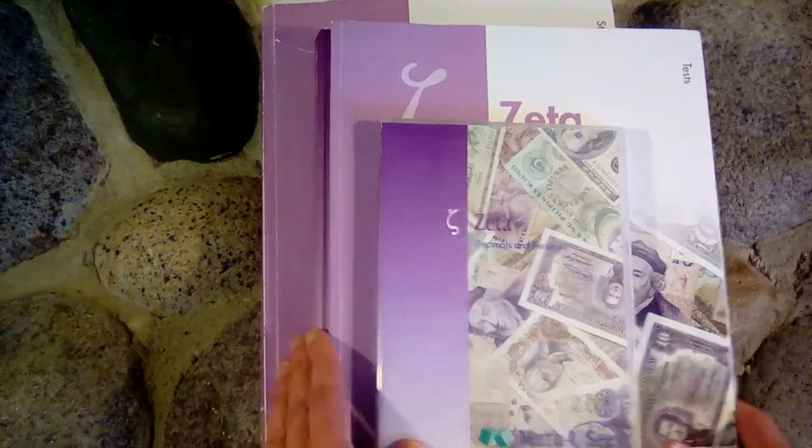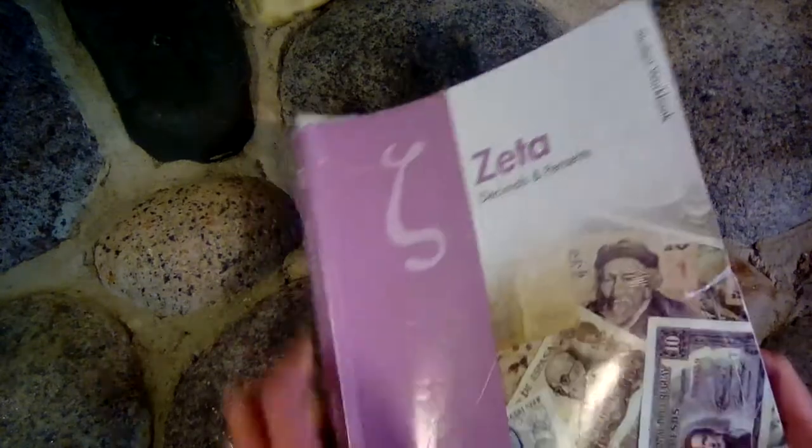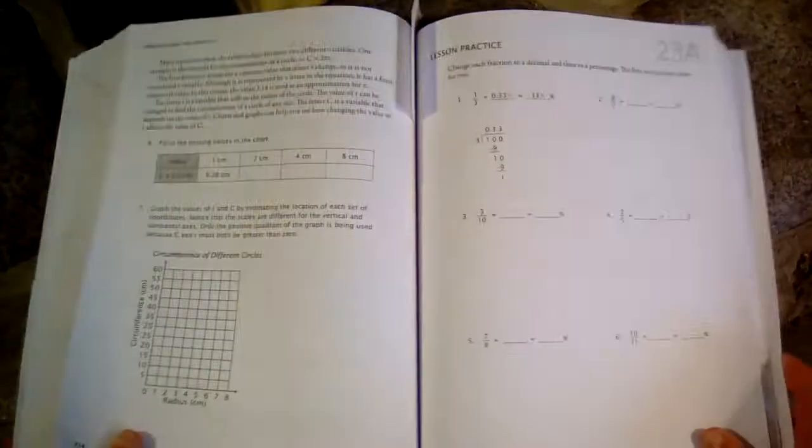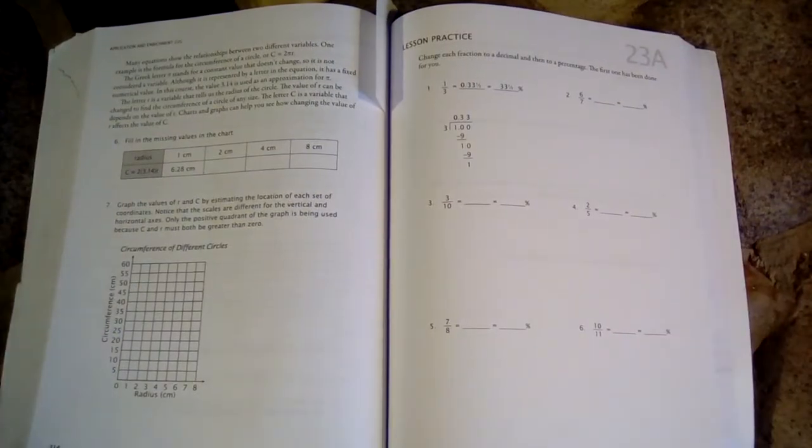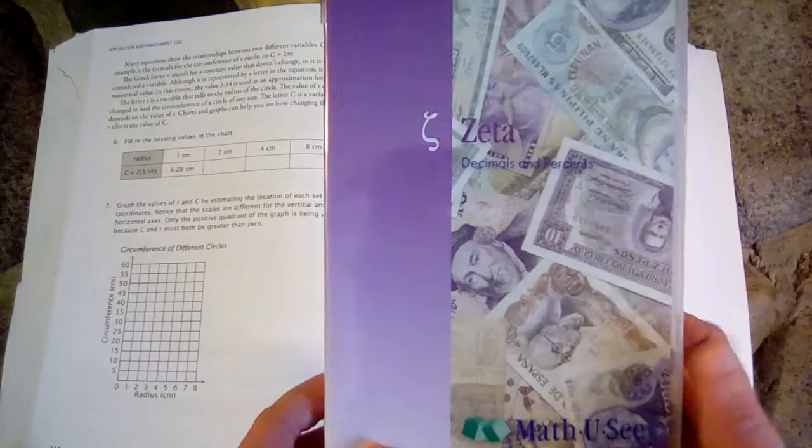So I'd like to show you how a lesson is set up. We'll take a look at lesson 23 as an example. So the first thing is that the student will watch the lesson on the DVD.